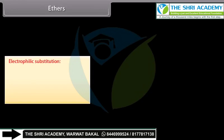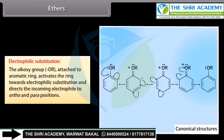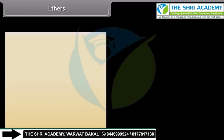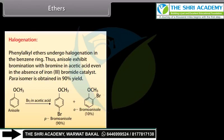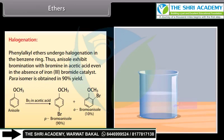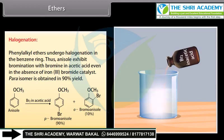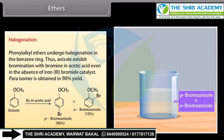Electrophilic substitution: The alkoxy group attached to the aromatic ring activates the ring towards electrophilic substitution and directs the incoming electrophile to ortho and para positions. Halogenation: Phenyl alkyl ethers undergo halogenation in the benzene ring. Thus, anisole exhibits bromination with bromine in acetic acid even in the presence of iron(III) bromide catalyst. The para isomer is obtained in 90% yield.